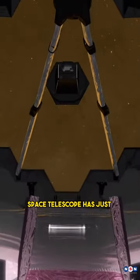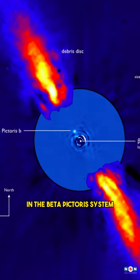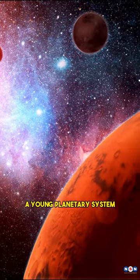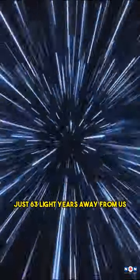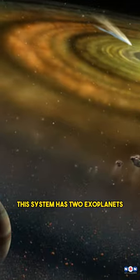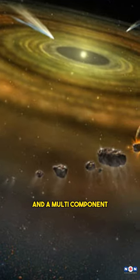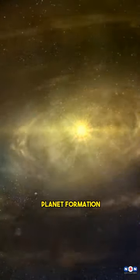NASA's James Webb Space Telescope has just discovered a new structure in the Beta Pictoris system, a young planetary system just 63 light-years away from us. This system has two exoplanets and a multi-component disk of debris, which are the leftovers of planet formation.